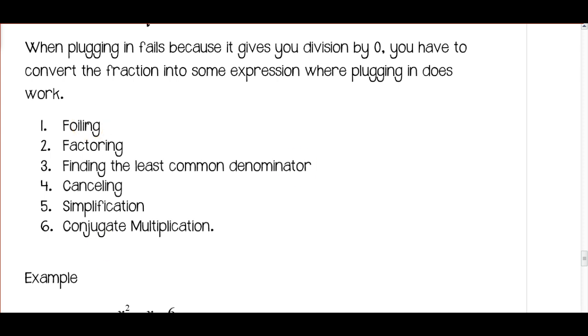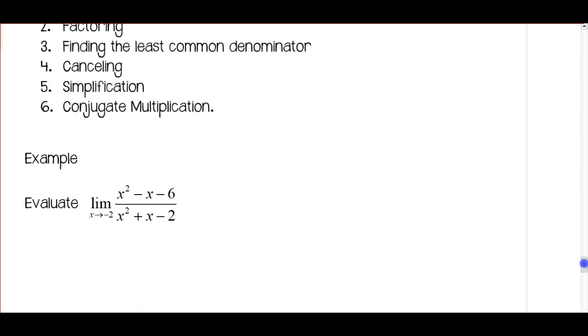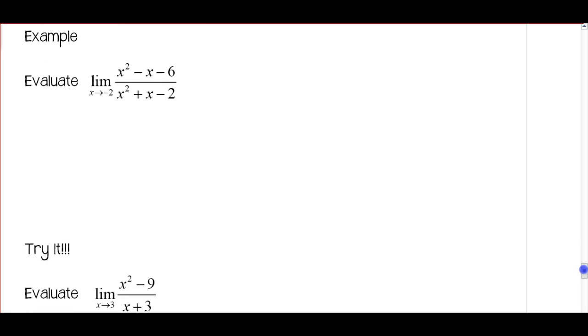Foiling, factoring, finding the least common denominator, canceling, simplification, or conjugate multiplication. We're going to look at three examples here, and you'll hit those other types of examples when you do the practice problems.